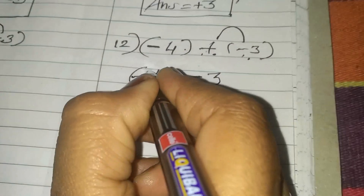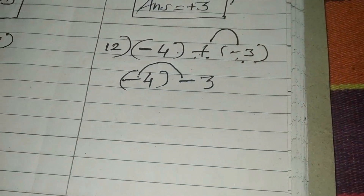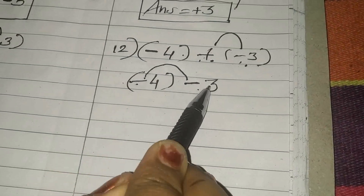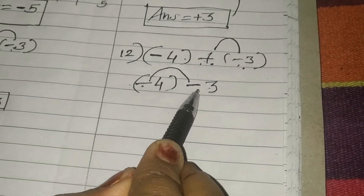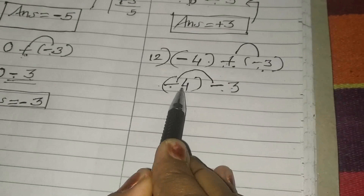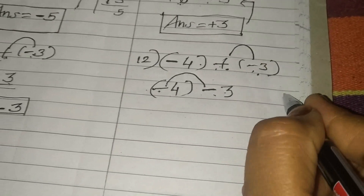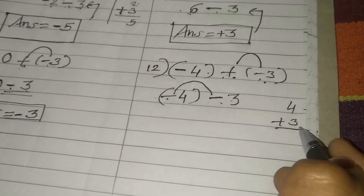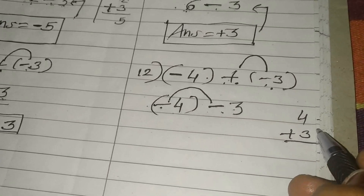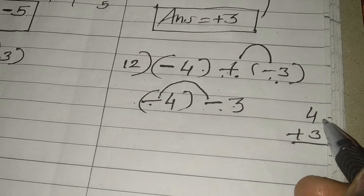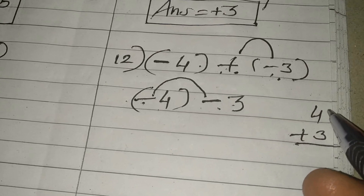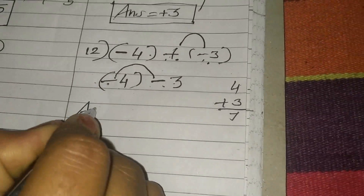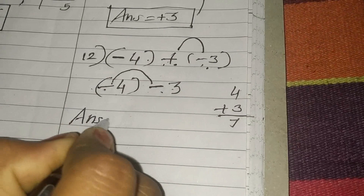Now again work for the sign. Same sign — minus minus — same sign addition. Add the numbers: 4 plus 3 is 7. I am purposely showing you this for understanding purposes — you may do it on a rough page. So your answer will be 7.